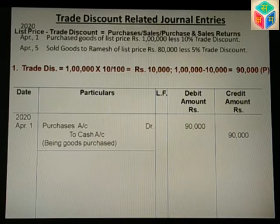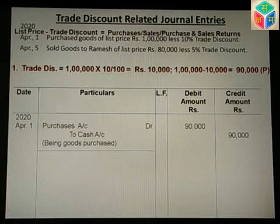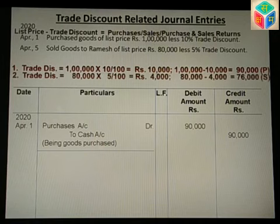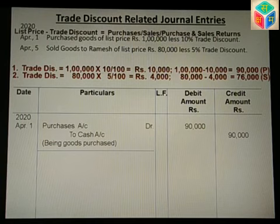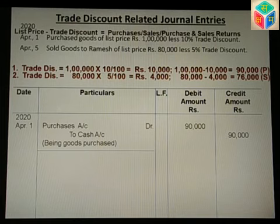Question 2: Sold goods to Ramesh of list price Rs 80,000 less 5% trade discount. Since Ramesh's name is mentioned and no cash is specified, this is a credit transaction. Trade discount: 5% of Rs 80,000 equals Rs 4,000. So the sales amount is Rs 80,000 minus Rs 4,000 equals Rs 76,000. The entry will be passed for Rs 76,000.